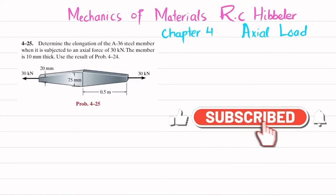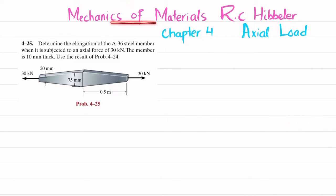Welcome back. In this video we are going to solve problem 4-25 from chapter 4 on axial load in Mechanics of Materials by RC Hibbeler. The problem statement is: determine the elongation of an A36 steel member when it is subjected to an axial force of 30 kilonewtons.